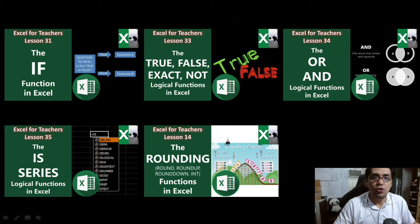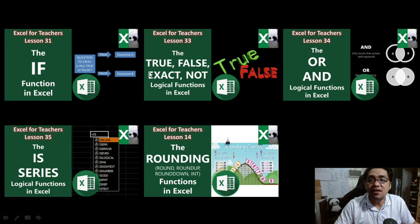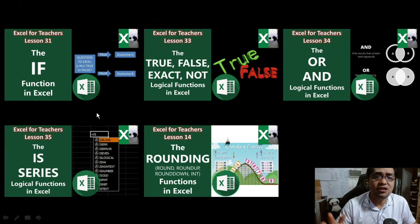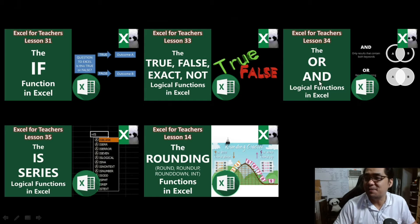Now, before we continue, just a quick note. You will notice on the previous screen that on the transmutation formulas, there are a lot of Excel functions. These are the Excel functions used in the transmutation formula: the IF function, the NOT function, the OR function, a couple of IS functions, and then the rounding functions. These functions are found as lessons on this channel, Carlo Excels. You don't have to learn them right now to use the transmutation formula, but if you're interested in learning more about Microsoft Excel, you can watch the videos in my channel.